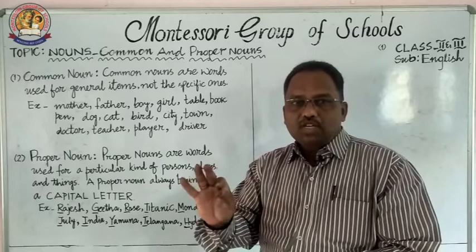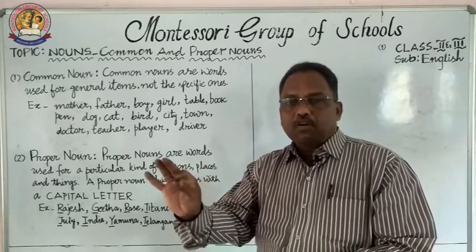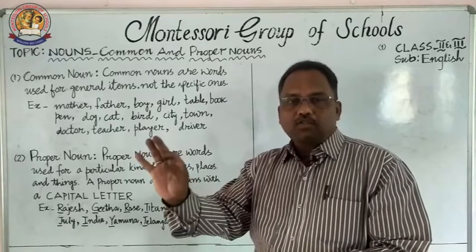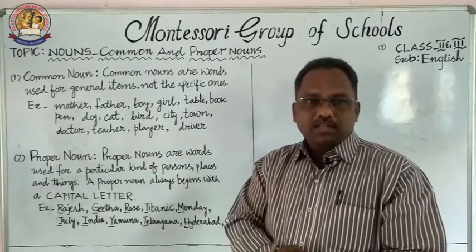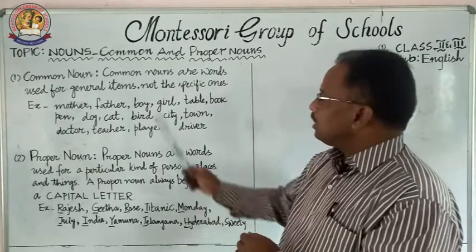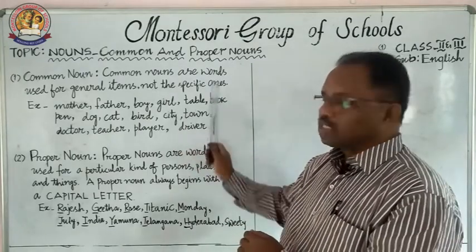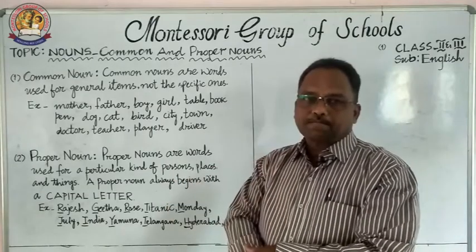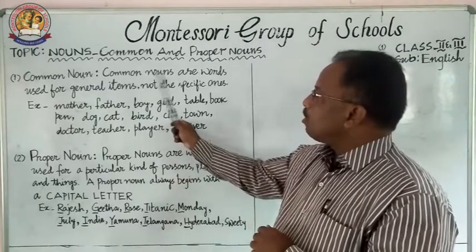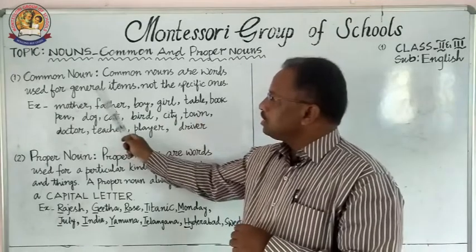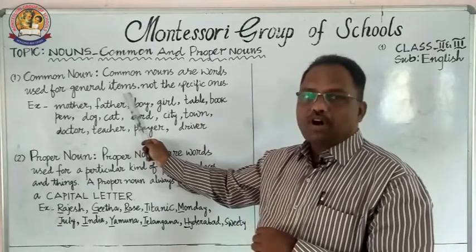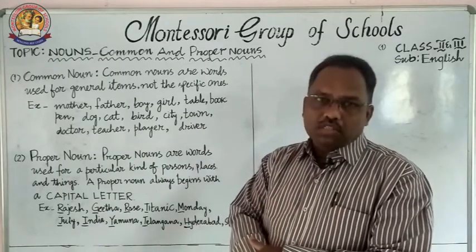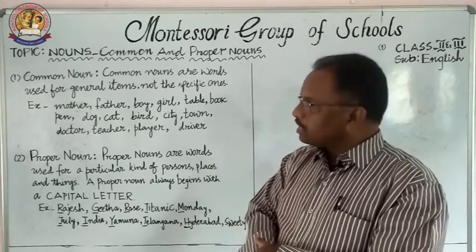We cannot use a common noun for a specific or particular place or specific or particular animal. Common nouns are words used for general or common items.